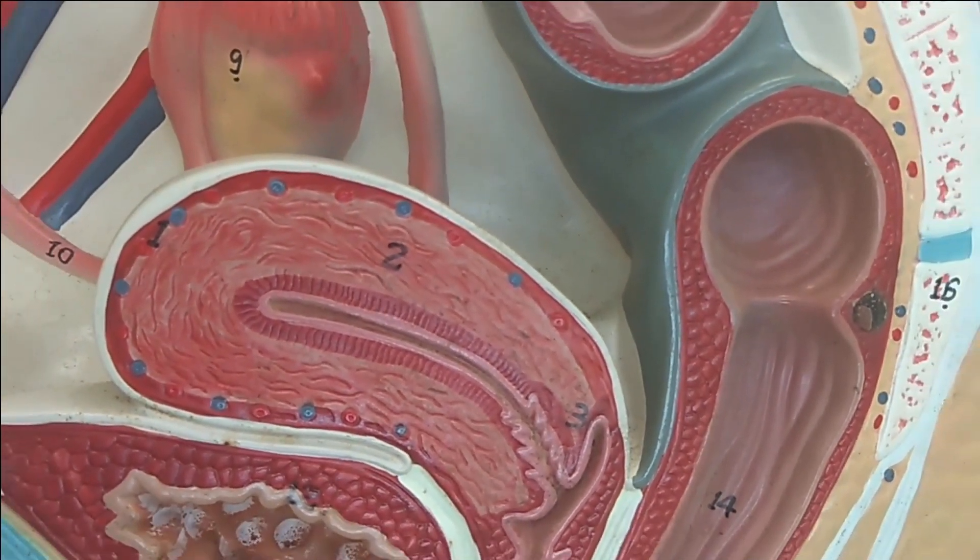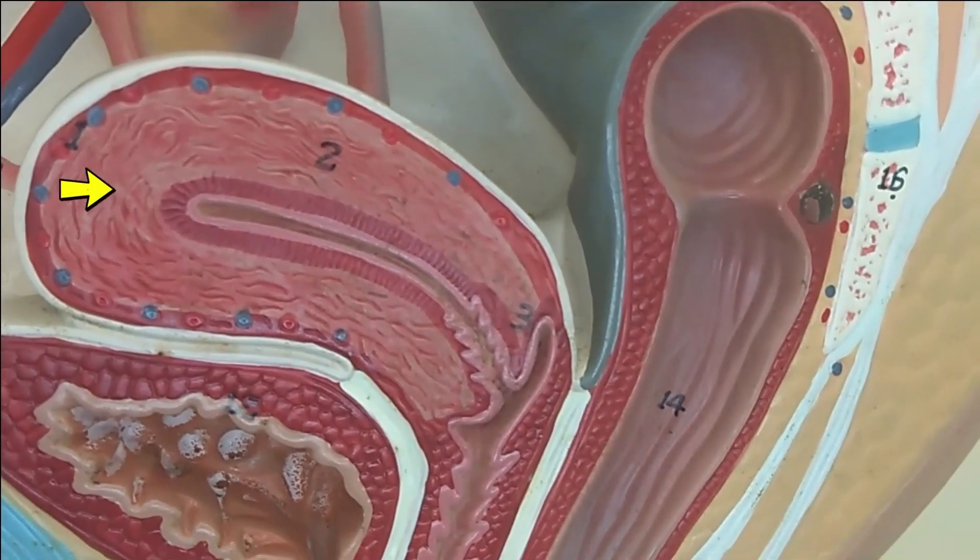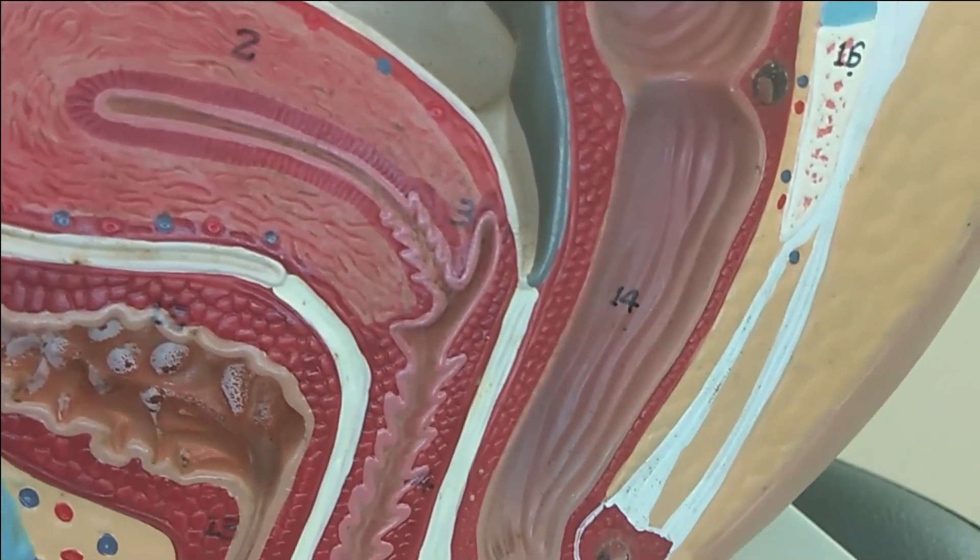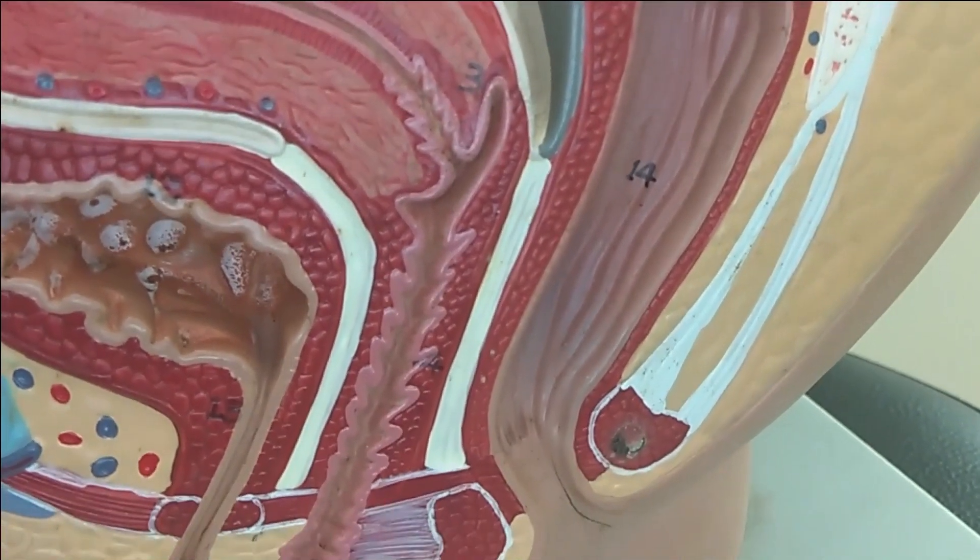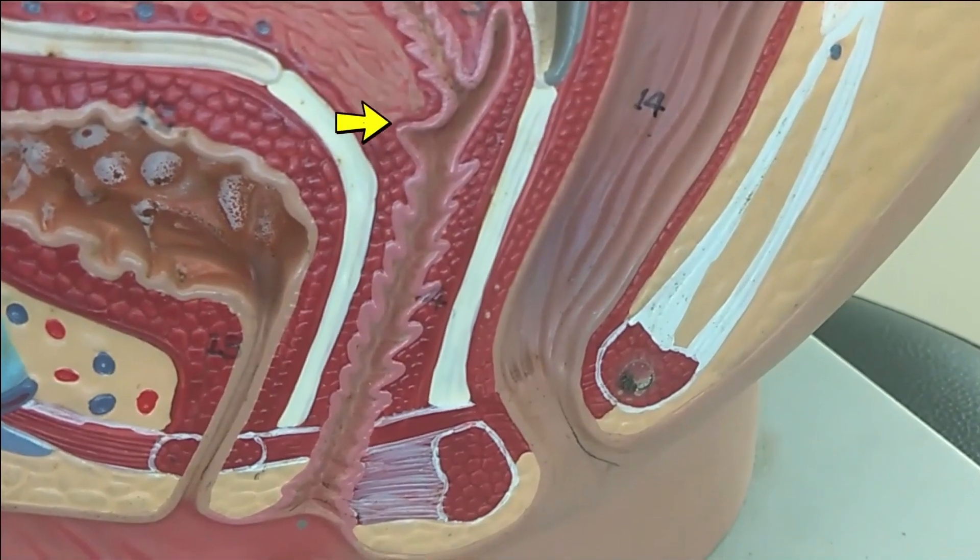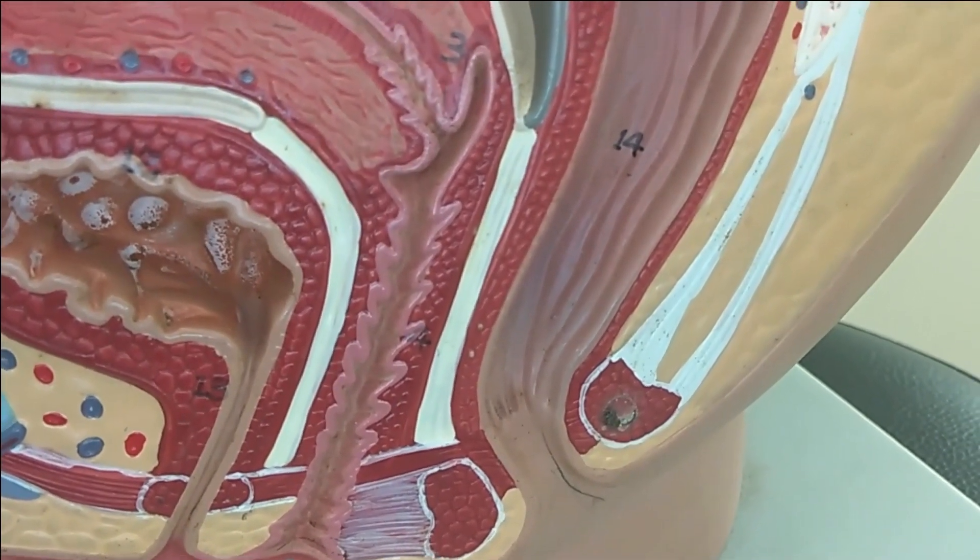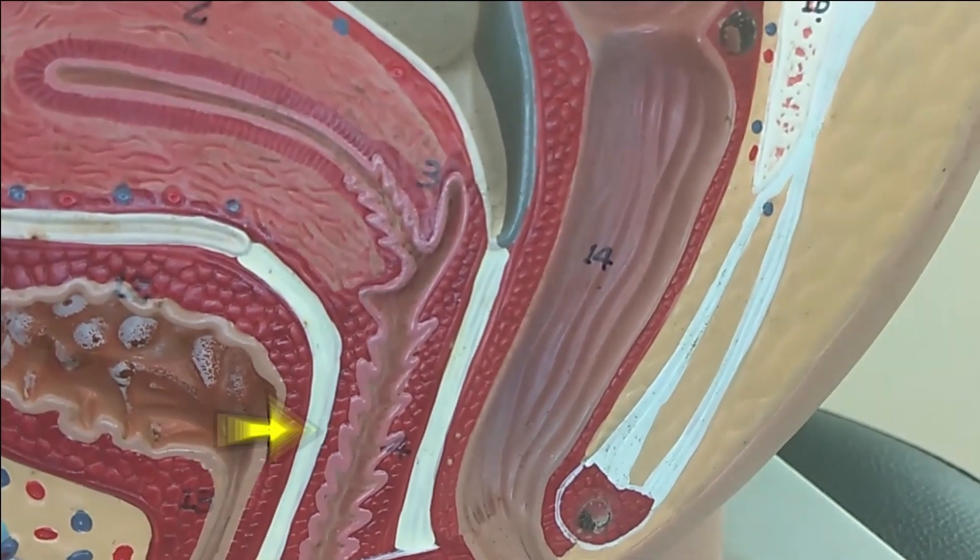Inside of the uterus, there is a layer called the endometrium. The opening of the uterus is called the cervix. And finally, you can see the vagina. The vagina is the female organ of copulation.